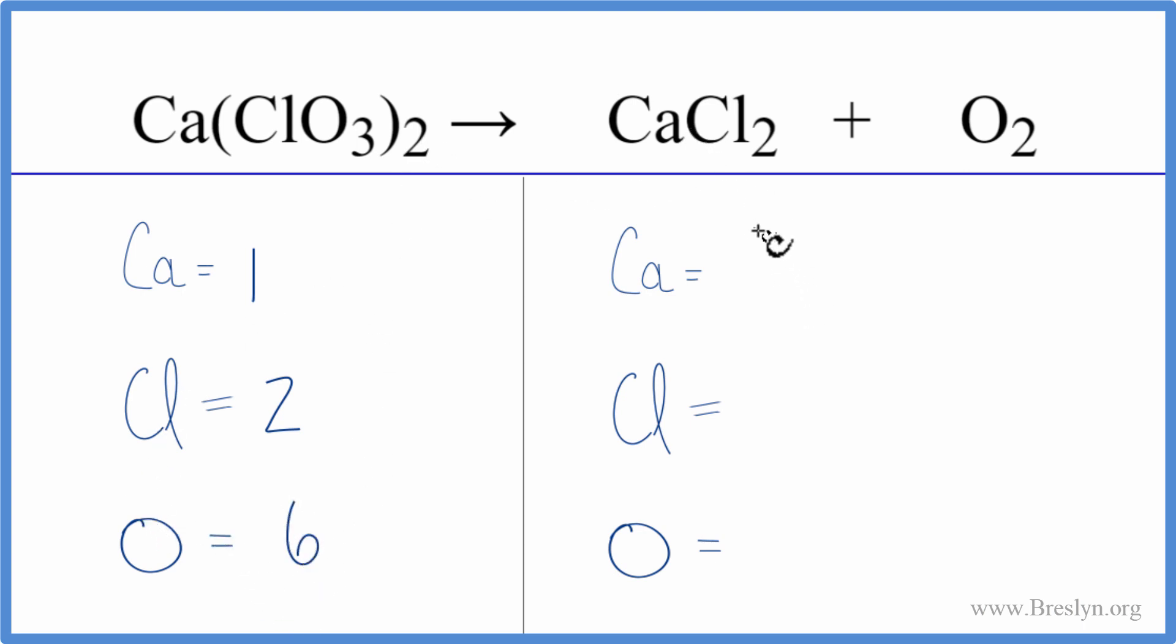On the product side, we have one calcium, two chlorines, and then two oxygen atoms.